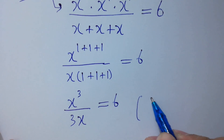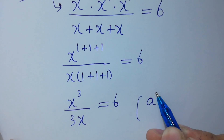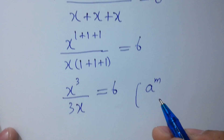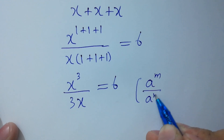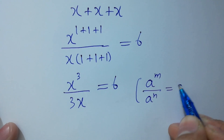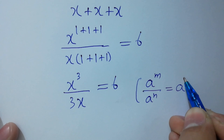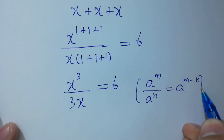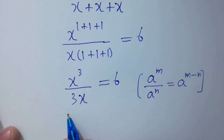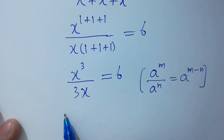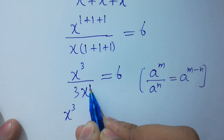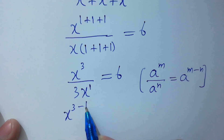Since a to the power m over a to the power n equals a to the power m minus n, it will be equal to x to the power 3 minus 1, which is x to the power 2.